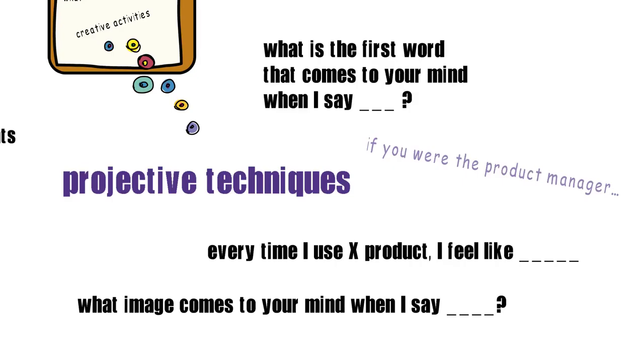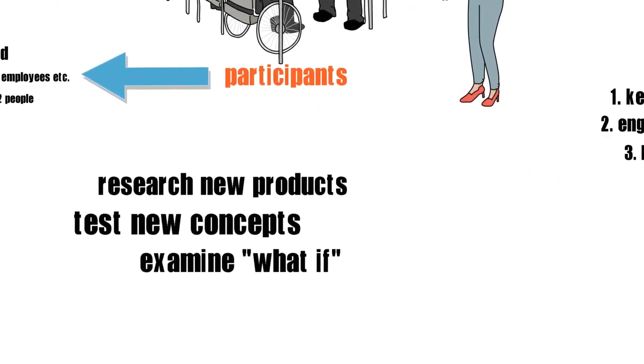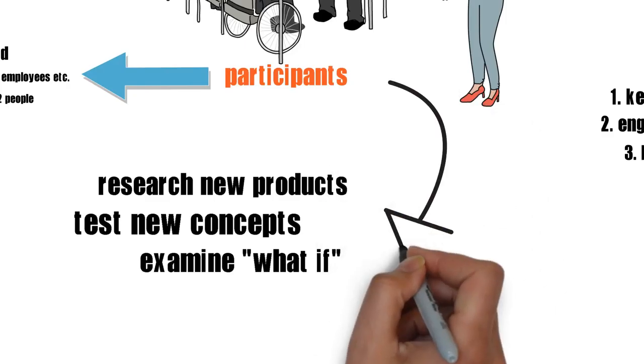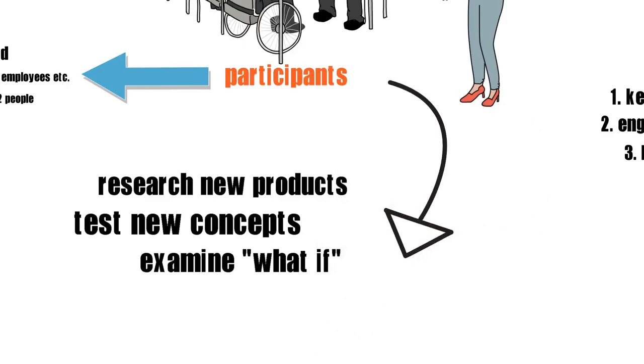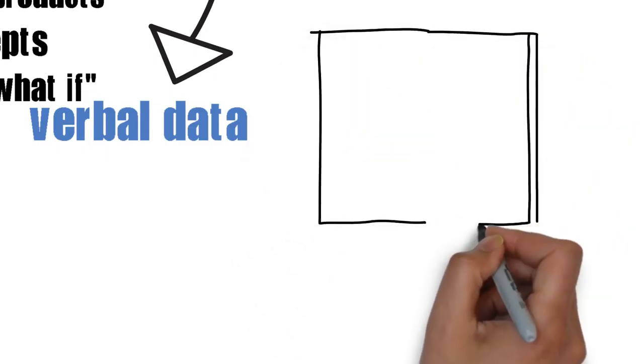You can use role-play to assign roles and ask questions about your product and promotion strategies. An example question would be: if you were the product manager, what improvements would you make to this product? Another idea would be to divide participants into two groups and ask them, for example, to perform a debate on whether price is an important factor or not when buying your product.